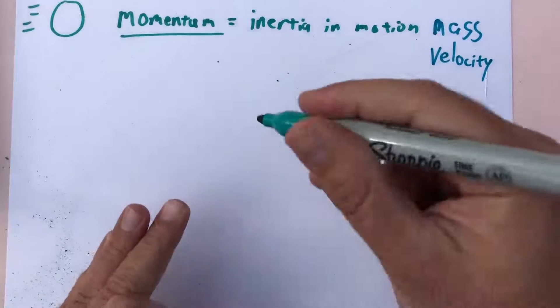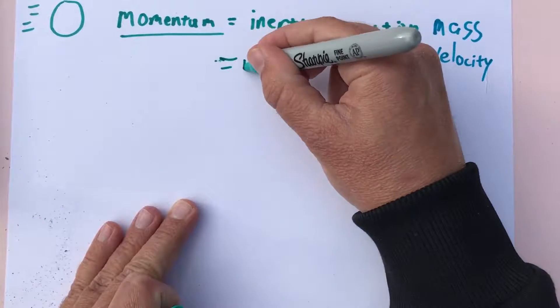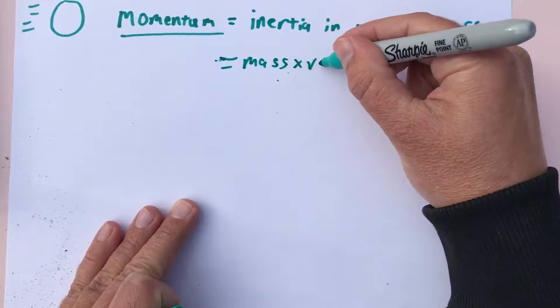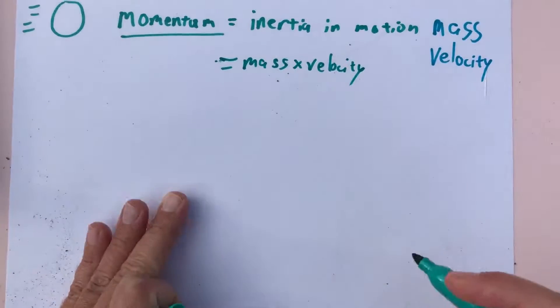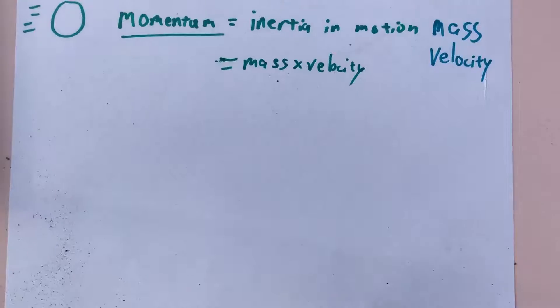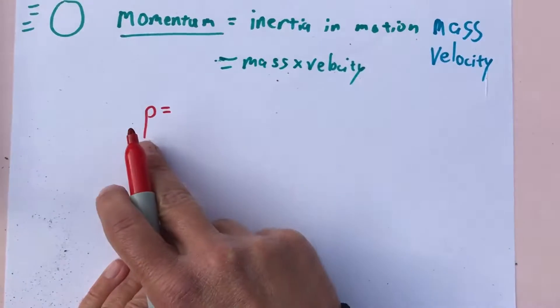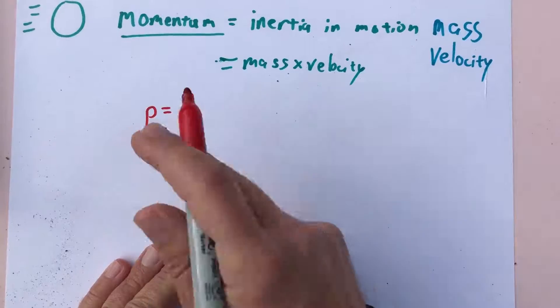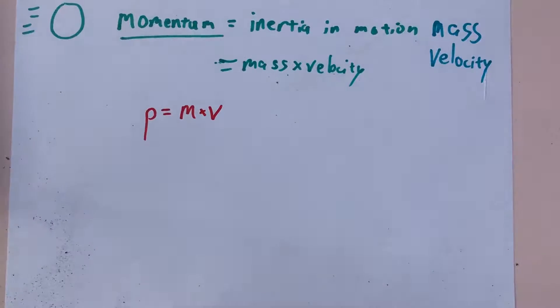So when we put the two together, momentum can also actually be defined as simply the mass times the velocity. So if we put it into an equation form it looks something like this: momentum, and the symbol for momentum is a lowercase p from an old Latin word, is mass times velocity.